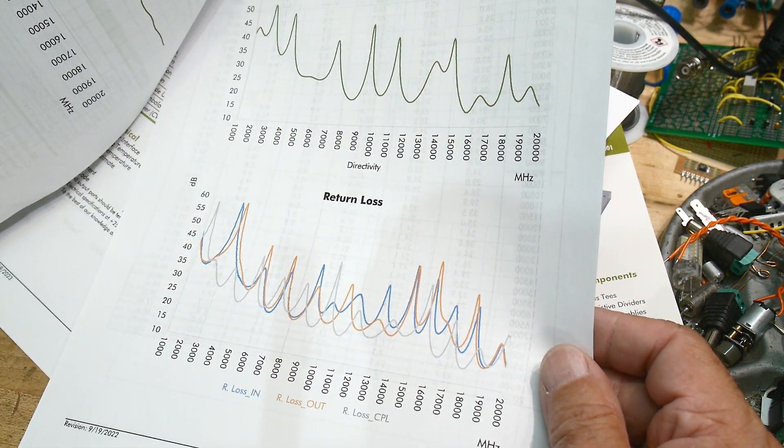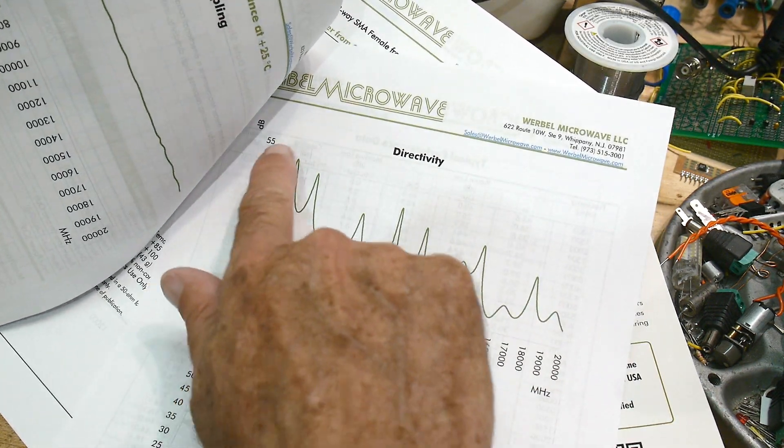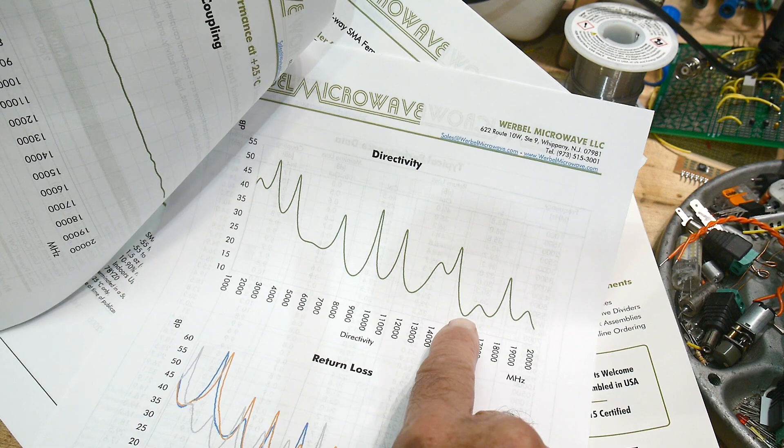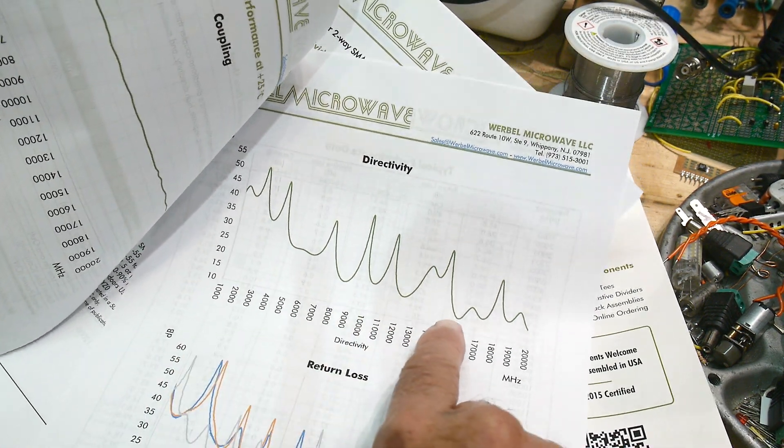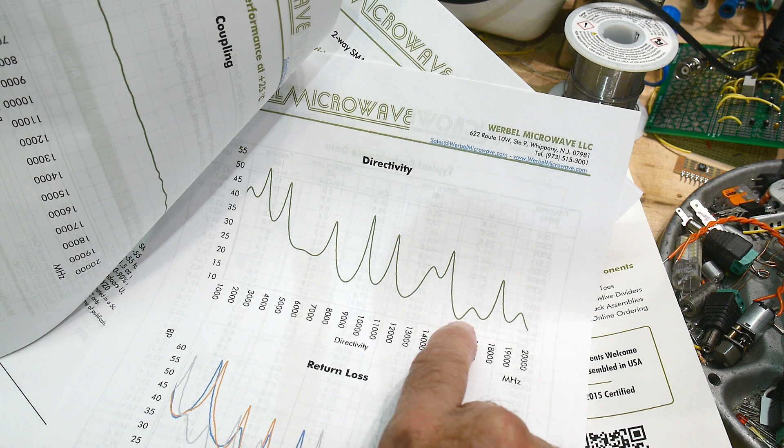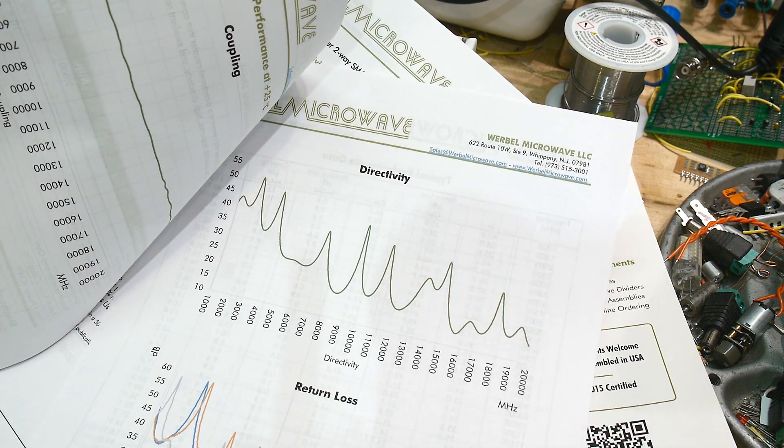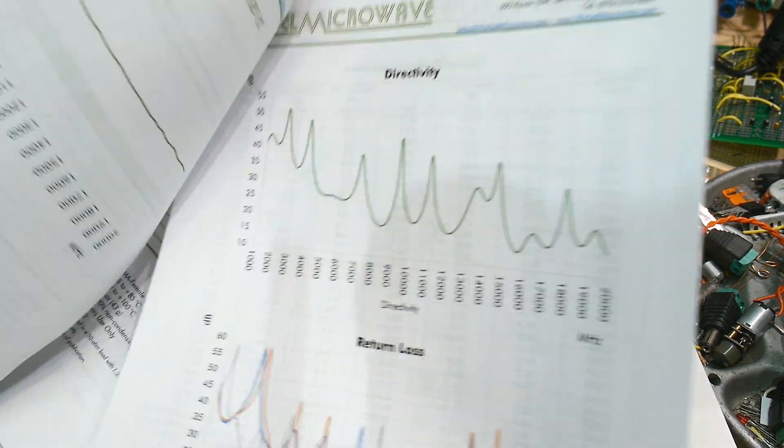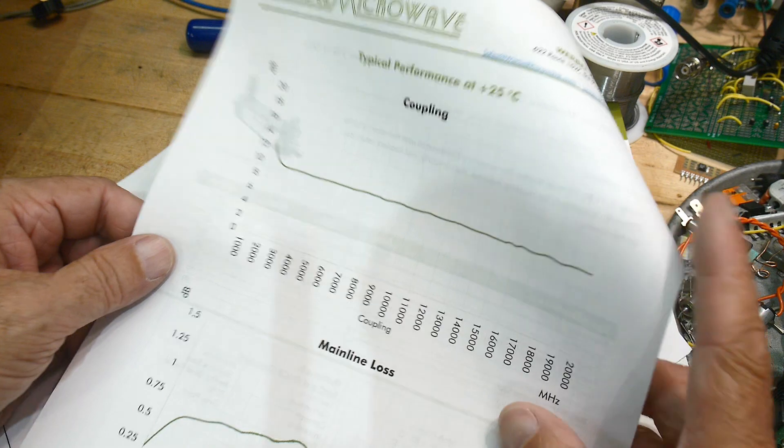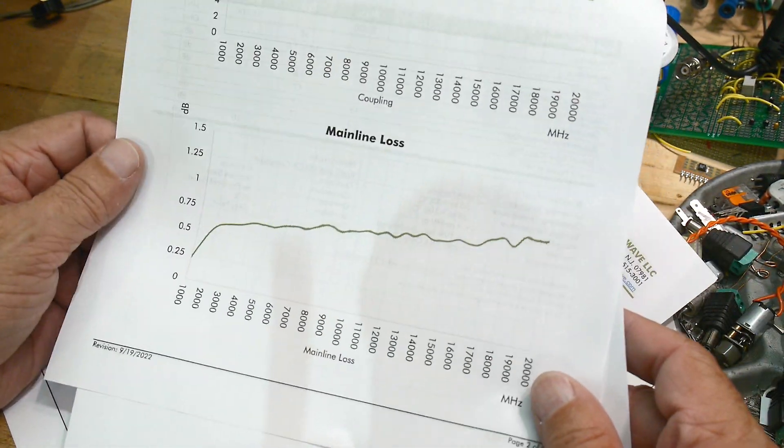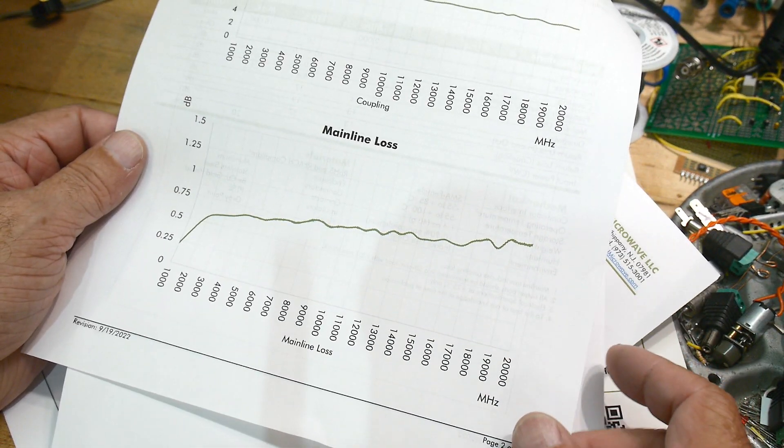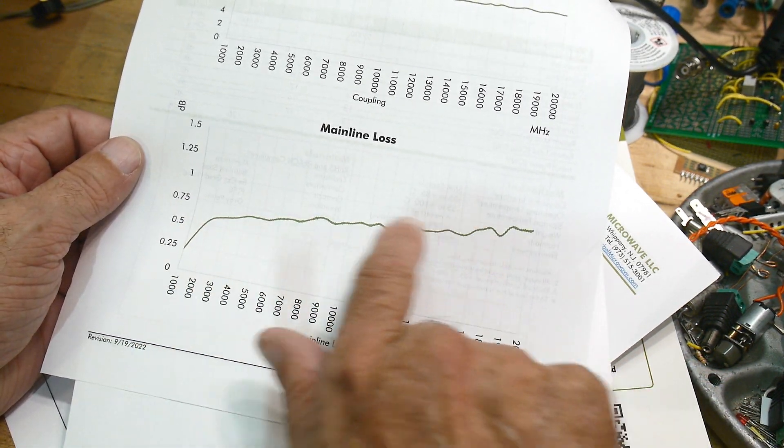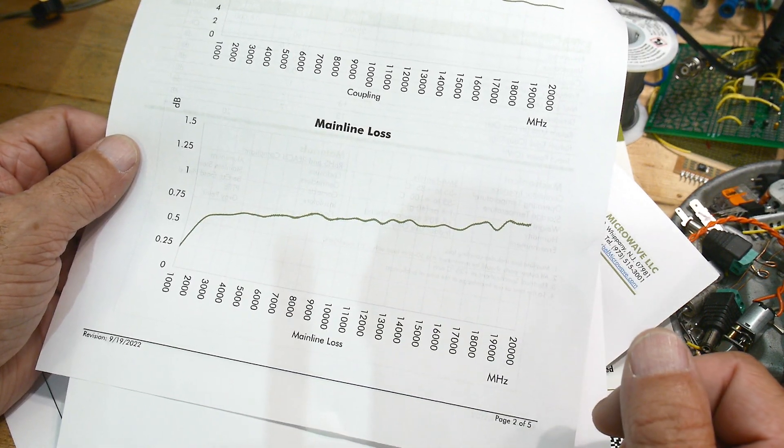The directivity plots they're showing here are—oh I see, you read the bottom of it, they're upside down. So yeah, worst case we're down here for directivity, but a lot of times it's much better than that. It depends on what frequency you're at and everything, so it's a bit lumpy. Here's the 10 dB coupling and here is the loss in the transmission line. It's about a quarter of a dB, something like that. Yeah, looks pretty good.